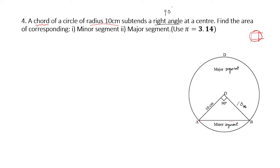It's given that the chord subtends a right angle at the center, so the angle formed at the center is 90 degrees — that is theta. We're asked to find the area of the minor segment, which is the red region. The rest of the circle becomes the major segment.